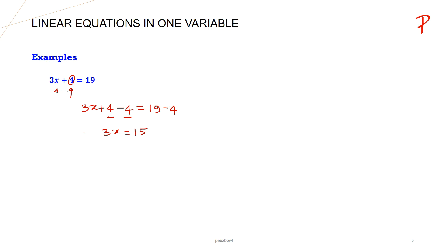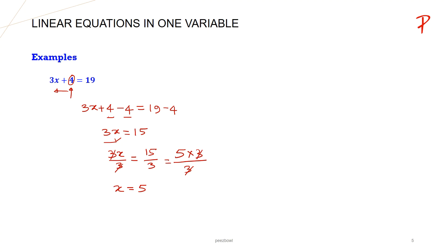For the second step, we need to find the value of x. On the left hand side, x is multiplied by 3. To isolate x, we divide both sides by 3: 3x/3 = 15/3. The 3s cancel, and 15 divided by 3 equals 5, so x=5. Remember: whatever you do to one side, you must do to the other side as well — that keeps the balance intact.